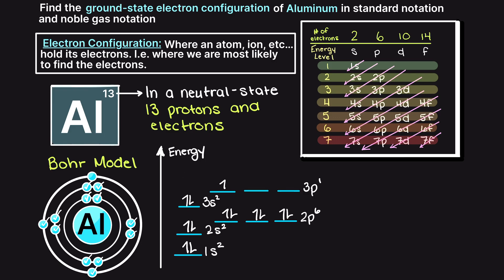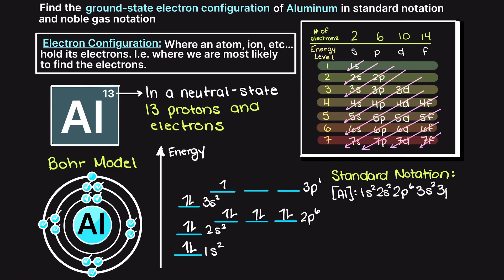Now that we have placed all of our electrons into the energy level diagram, we can write out our electron configurations. Firstly, in standard notation we have 1s², 2s², 2p⁶, 3s², and 3p¹.